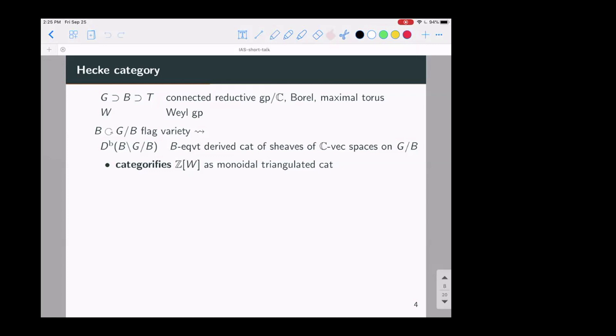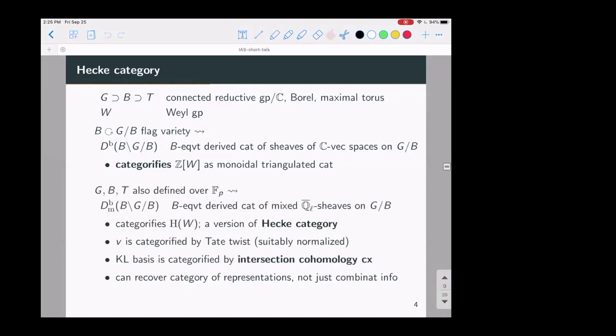So there are certain complexes of sheaves on the flag variety that corresponds to the standard basis of W, and the convolution product multiplies them together in the same way as elements of W, up to passing through the Grothendieck group. So just like you could deform the Weyl group to the Hecke algebra, you can also do better.